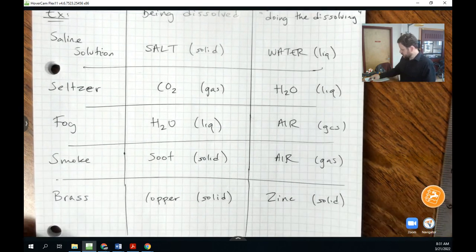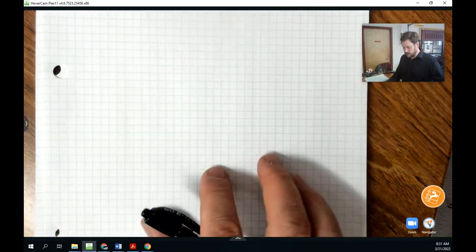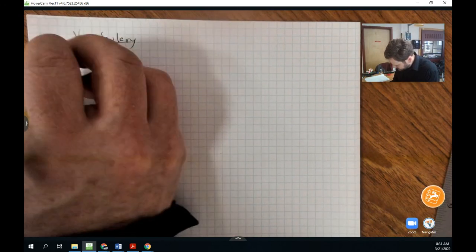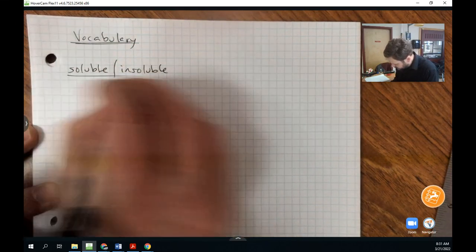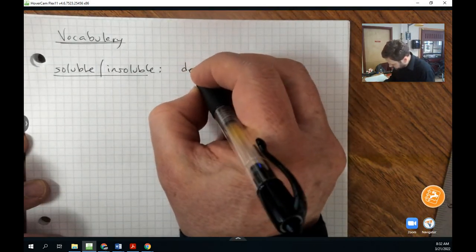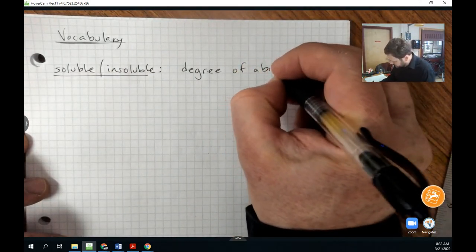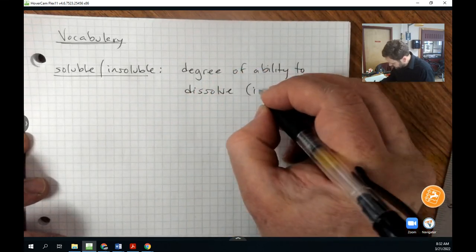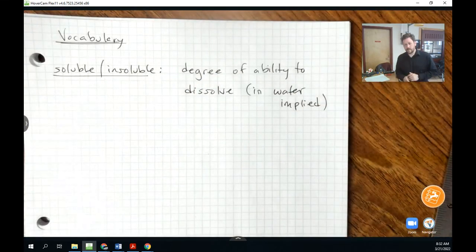The next thing we're going to tackle is just some basic vocabulary about solutions. And some of these vocabulary terms are going to be familiar. I'm going to start on a new page and just title this vocabulary. And the first bit of vocabulary I want to make sure we understand are these words soluble and insoluble. And this might be pretty intuitive, but I want to emphasize that this refers to the degree to which something can dissolve, or the degree of ability to dissolve. And in water is implied.